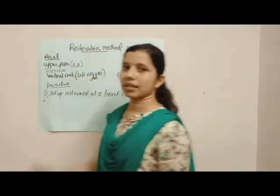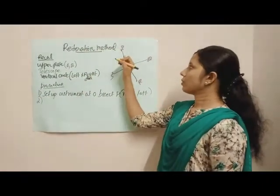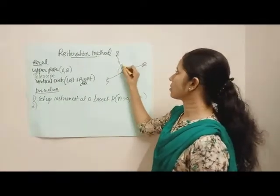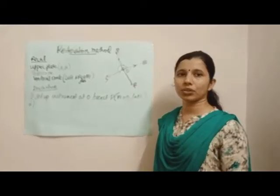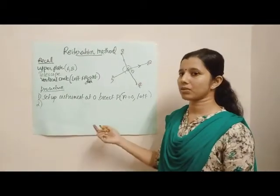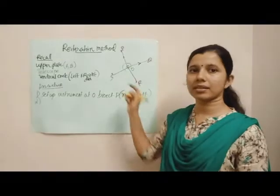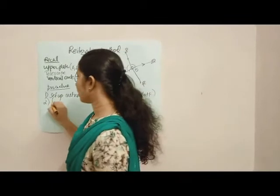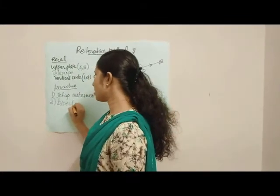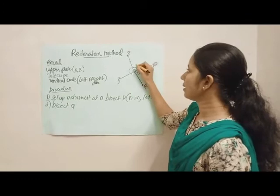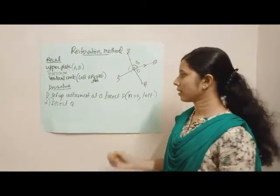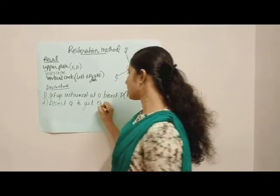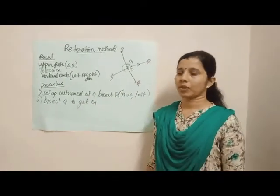The second step: to read the included angle POQ, turn the telescope to bisect point Q. Use the upper clamp screw and turn the telescope so that the second point Q is bisected accurately. Bisect Q to get the first included angle, theta 1.